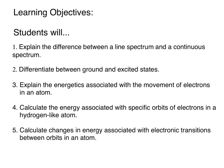After watching this video lecture, students will be able to explain the difference between a line spectrum and a continuous spectrum and how they're sourced. You're going to be able to differentiate between the ground state and the excited states within an atom with respect to the electron's position, explain the energetics associated with movement of electrons in an atom, and calculate energy of specific orbits in hydrogen-like atoms as well as calculate changes in energy associated with electronic transitions between orbits.